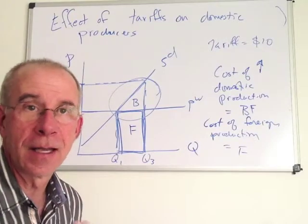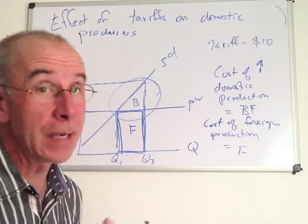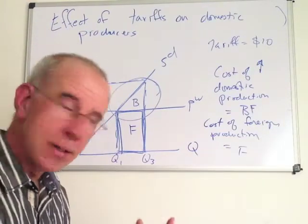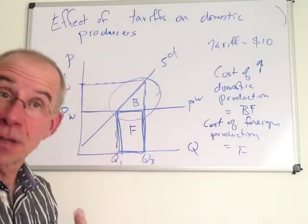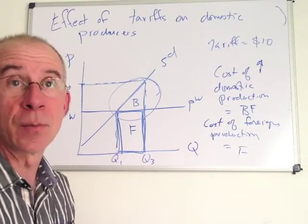And if you think about it, if it didn't cost more to get it from domestic producers, you wouldn't have been importing that amount from foreigners in the first place. The reason that you imported Q1 to Q3 is because the domestic producers could only do it at a higher price.